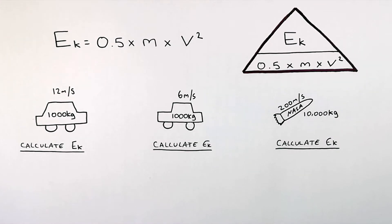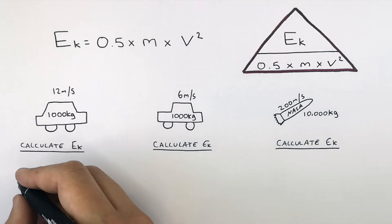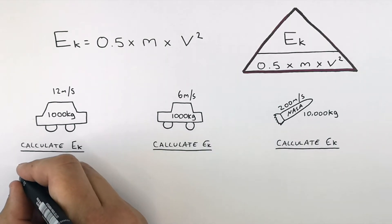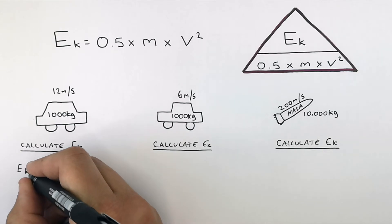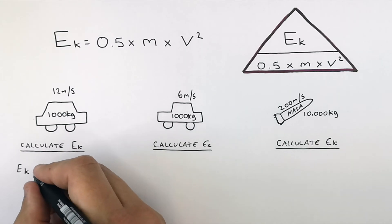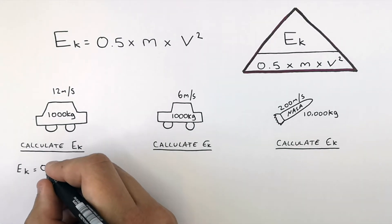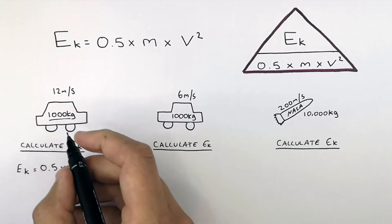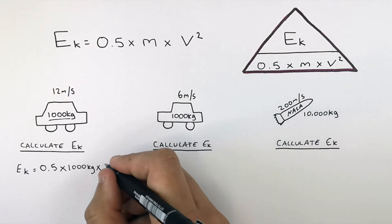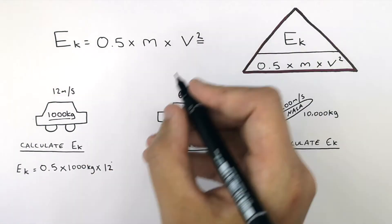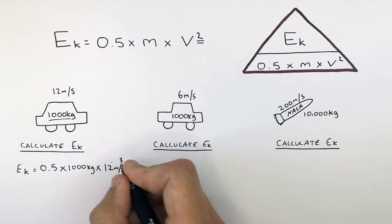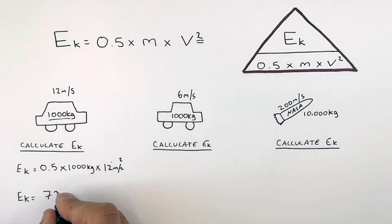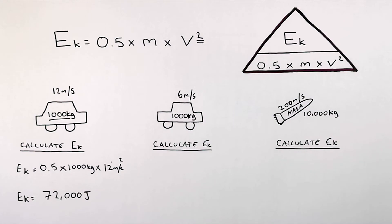Because we're trying to calculate the kinetic energy stored in these objects, we don't have to rearrange the equation. We simply recall E equals 0.5 times mass times velocity squared. Substituting in the numbers: kinetic energy equals 0.5 times 1,000 kilograms times 12 meters per second squared. We square the 12, giving a total kinetic energy of 72,000 joules stored in the kinetic energy store of this object.